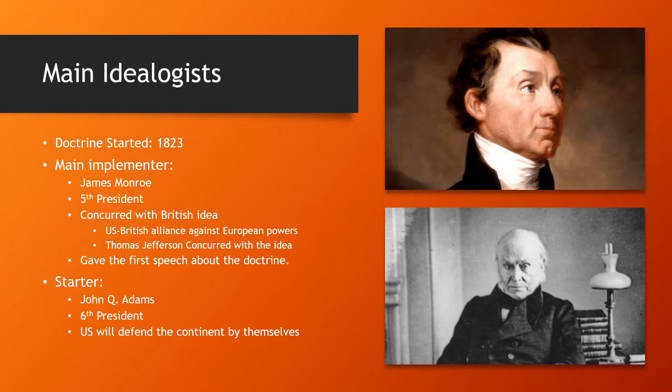The first speech explaining the Monroe Doctrine was given in 1823 by James Monroe, the fifth president of the United States. In the first instance, British officials wanted a coalition between the US and Britain against the rest of the European powers, which was agreed upon by Monroe and Thomas Jefferson. But John Quincy Adams had a different perspective and suggested that the US needed to defend themselves and the continent by their own means, with no alliances besides those within their own hemisphere.